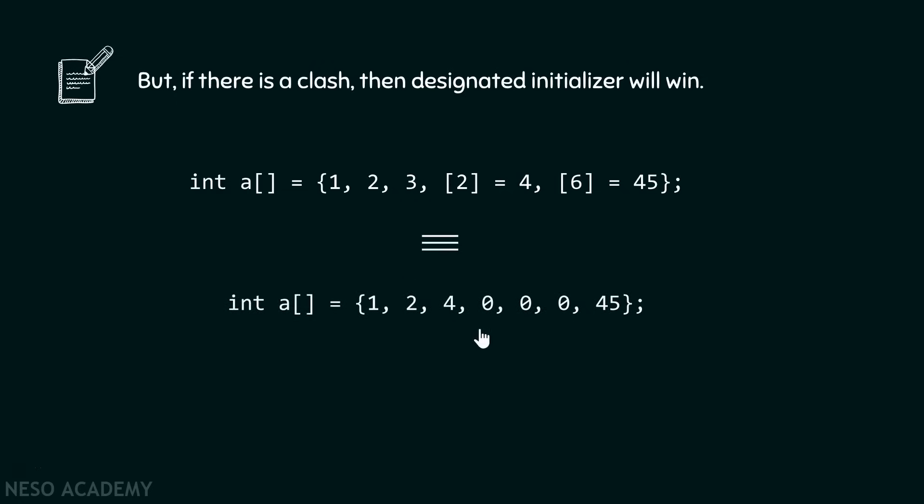This means this array is equivalent to this array. At position 2, 4 will get stored, not 3.